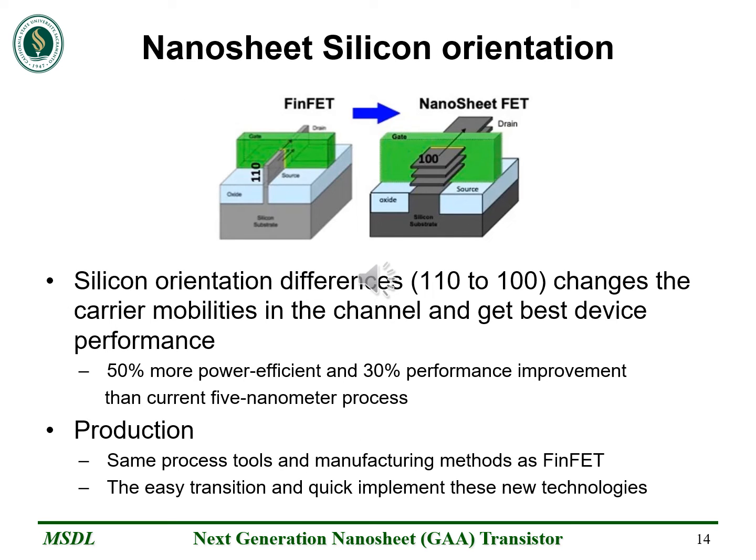Another advantage of nano-sheet design is silicon orientation. With horizontal sheets, the best performance silicon orientation is attained. That's why the 3nm nano-sheet transistor is 50% more power efficient and shows 30% performance improvements over the current 5nm process available in the market. From a production standpoint, it uses the same process tools and manufacturing methods as FinFET, so manufacturers can easily transition and quickly implement the new technology without spending overhead costs.